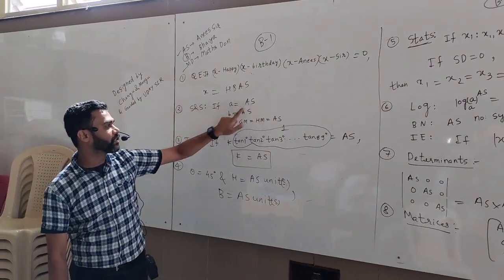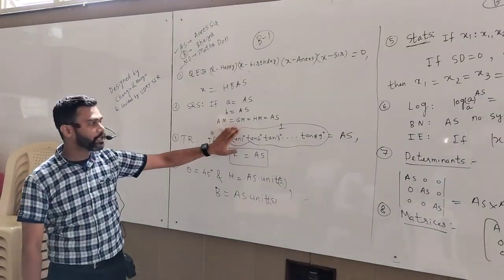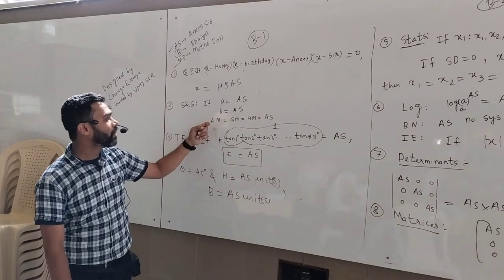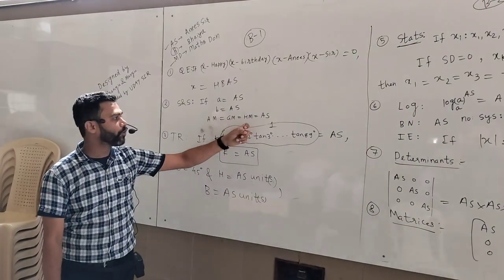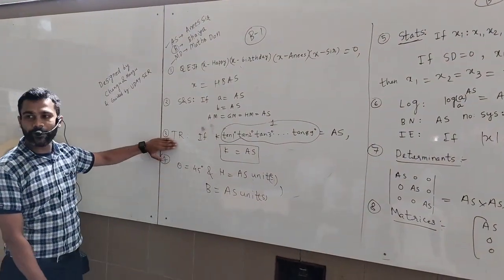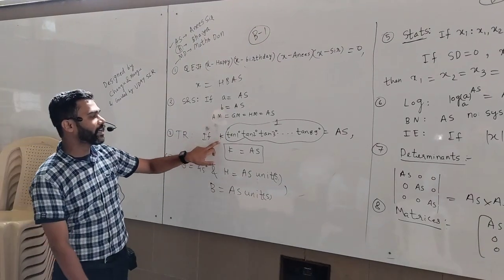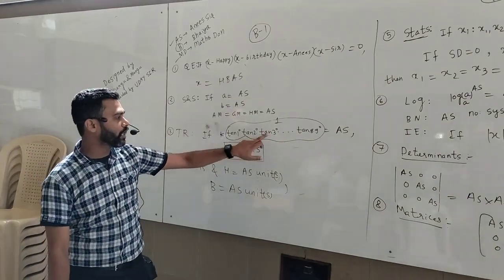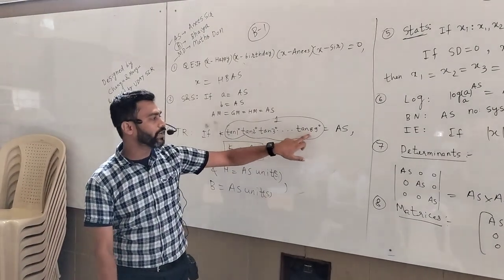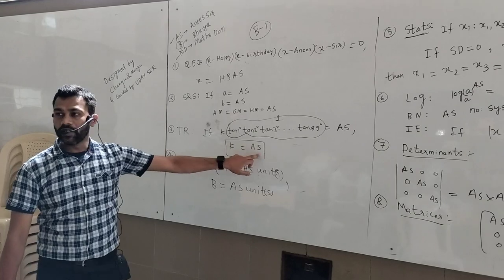If a is equal to Anisar Sir and b is equal to Anisar Sir, then AM is equal to GM is equal to HM is equal to Anisar Sir — which is arithmetic mean, geometric mean, harmonic mean. The third chapter is trigonometric ratios: if k times tan 1° × tan 2° × tan 3° ... up to tan 89° is equal to Anisar Sir, then k is equal to Anisar Sir.